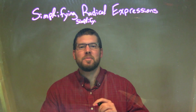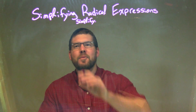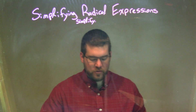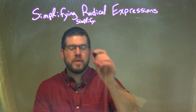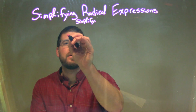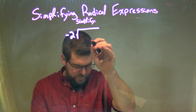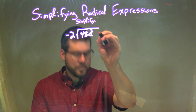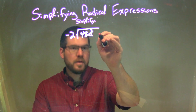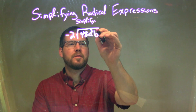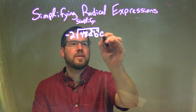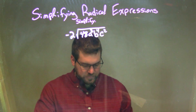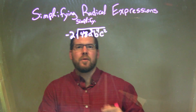Hi, I'm Sean Gannett, and this is MinuteMath. Today we're going to learn about simplifying radical expressions. So if I was given this expression: negative 2 times the square root of 48a to the third times b to the fourth times c squared.